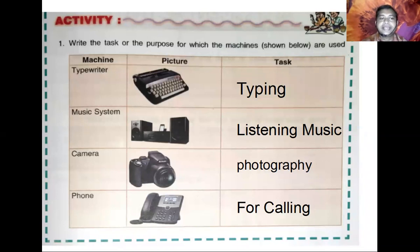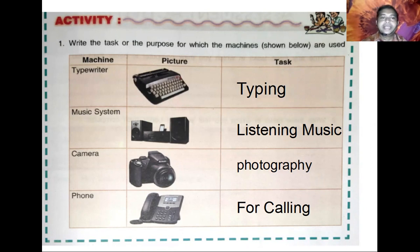So to recap: the camera purpose is photography, the speaker purpose is to play or listen to songs, and the typewriter purpose is typing. These are the tasks for each machine.